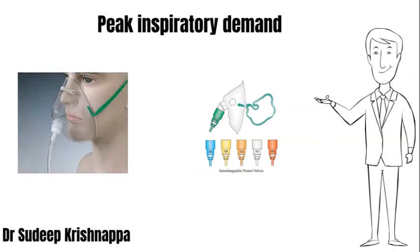This is one of the main reasons why I would prefer to call them low flow devices and high flow devices rather than variable and fixed performance devices. A low flow device generates a total flow equal to what we set, whereas a high flow device generates a total flow in excess of what we are setting. I hope this was helpful — thank you.